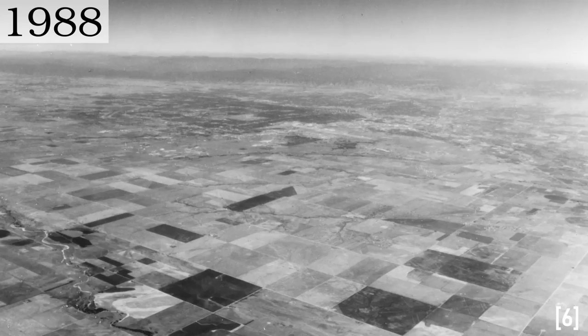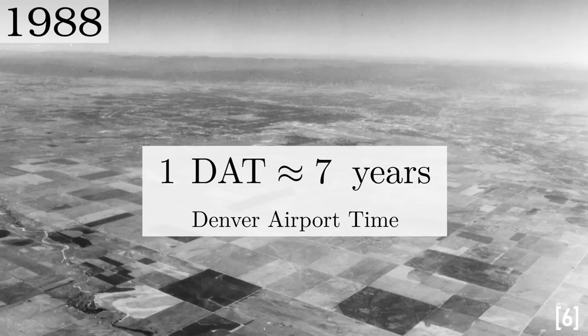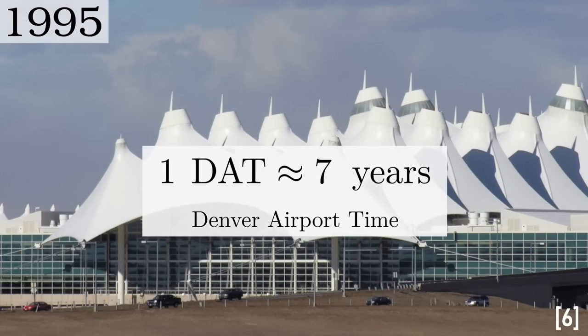Their 7 years travel time is roughly equal to what I would call one unit of DAT or Denver Airport Time. The time from when the city of Denver, Colorado made a preliminary agreement to acquire land, to an airport becoming operational.